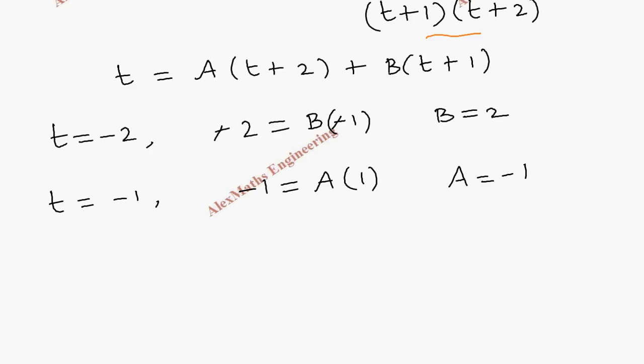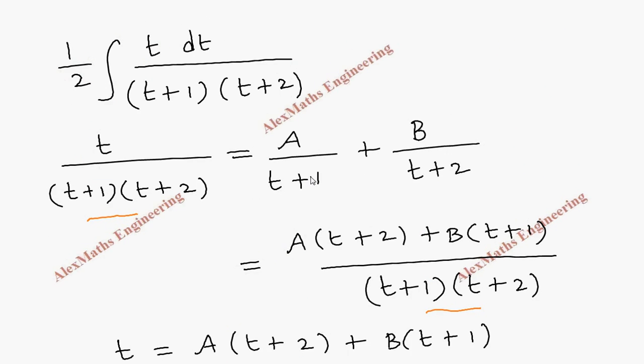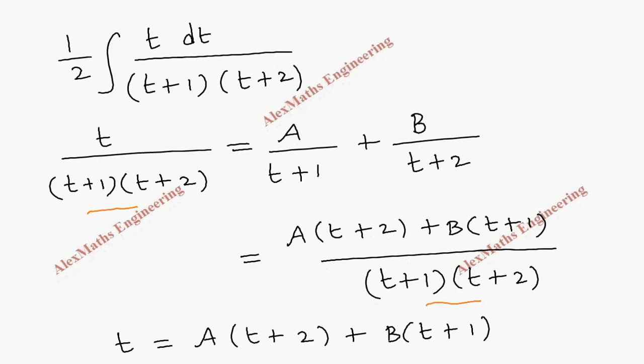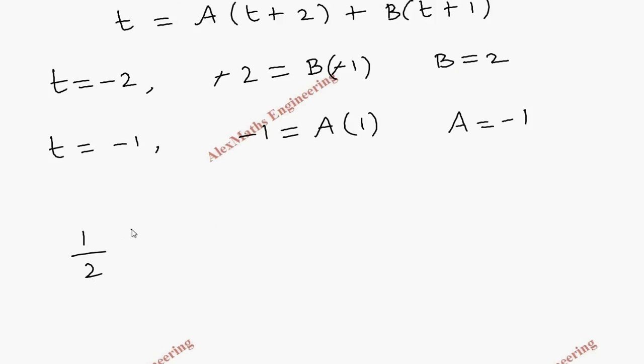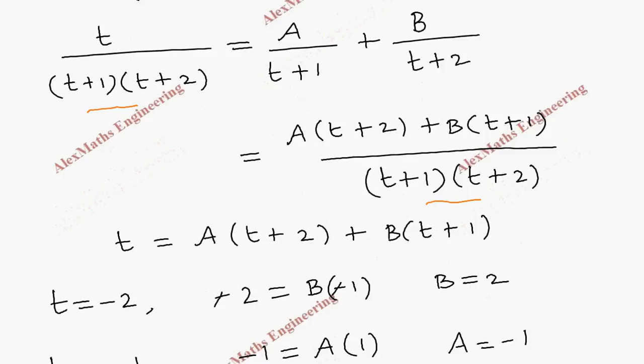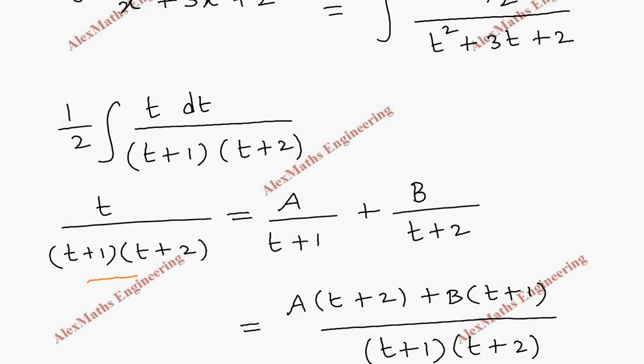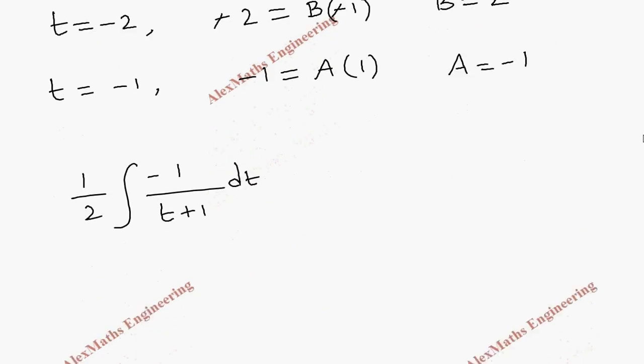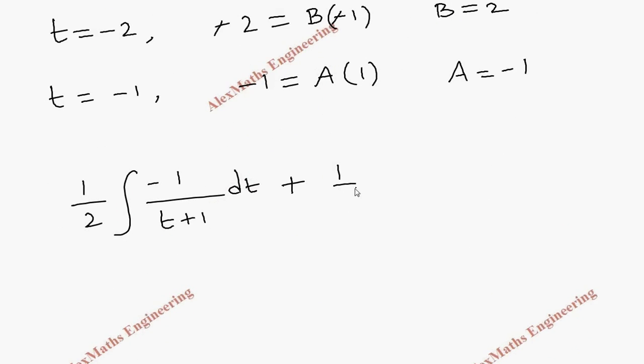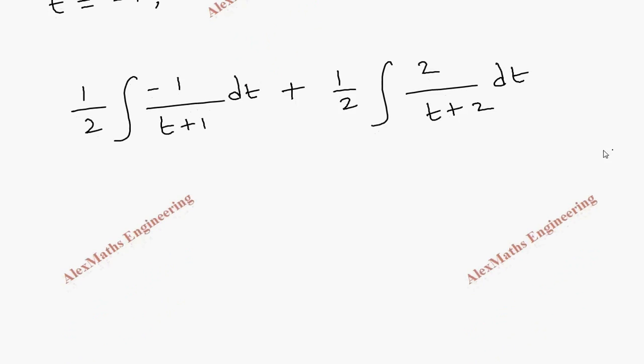Now we are going to replace the value of a and b in the term where we apply the partial fraction. And there is a half common for both. So we have to write half integral a value by t plus 1 and we have dt, that is, with respect to t. Then b by t plus 2, again, plus half integral 2 by t plus 2 dt.